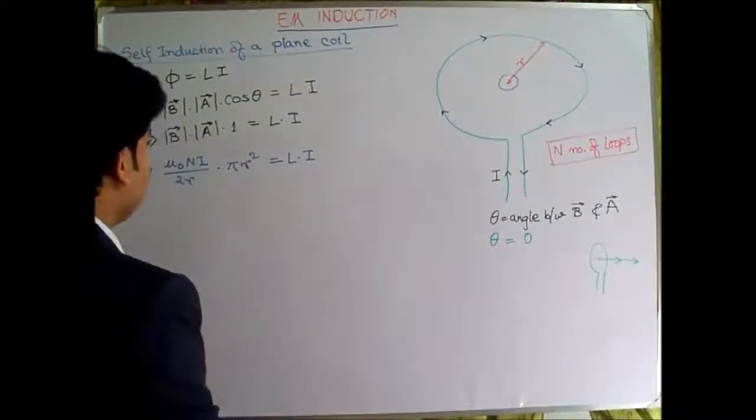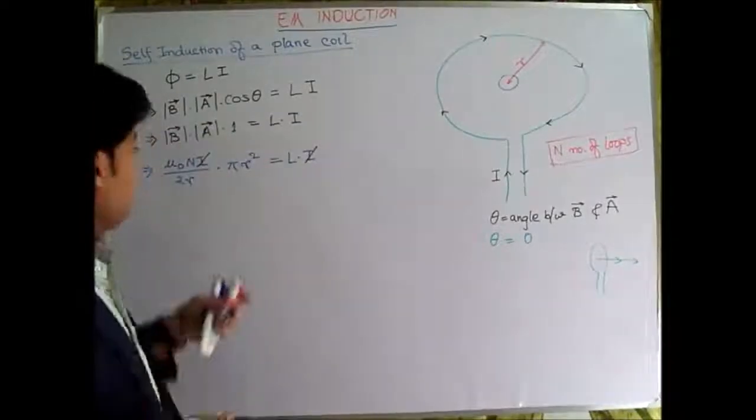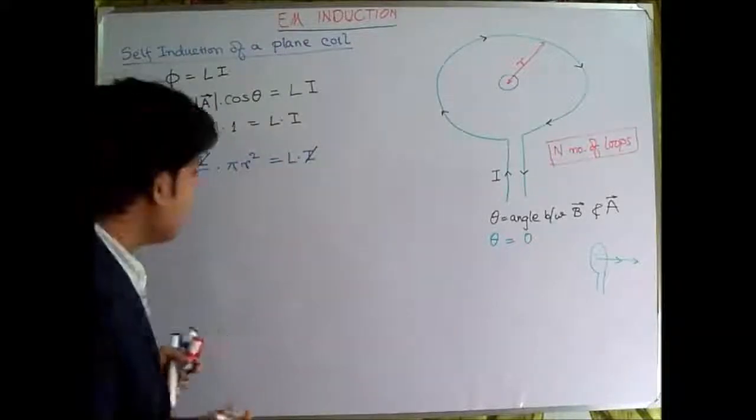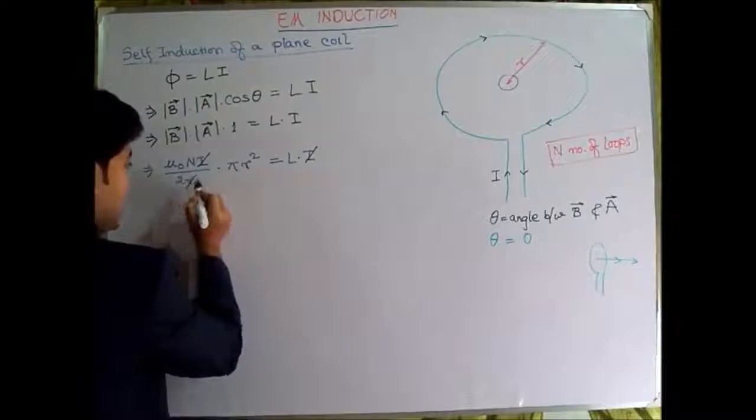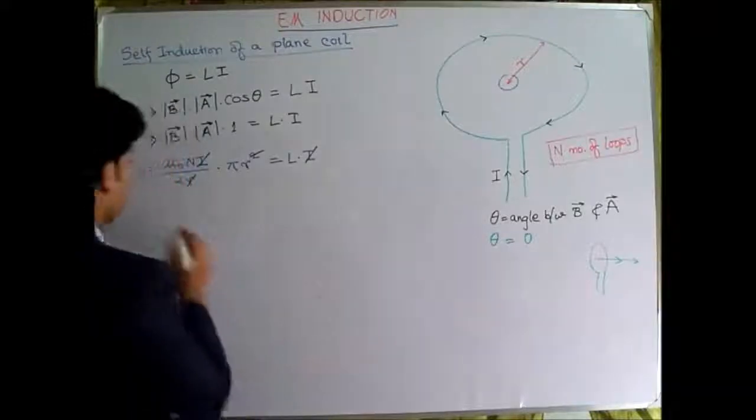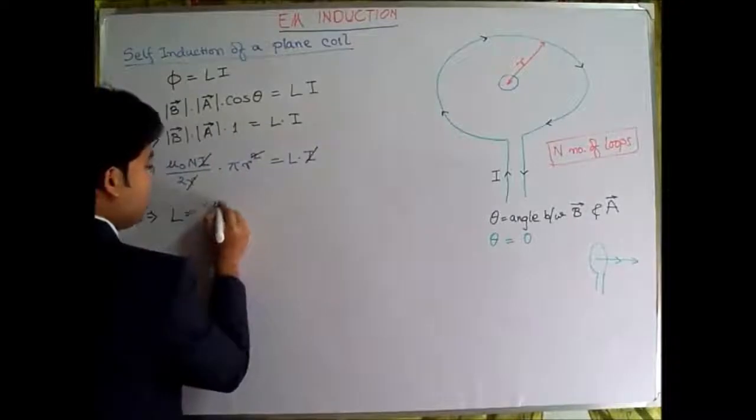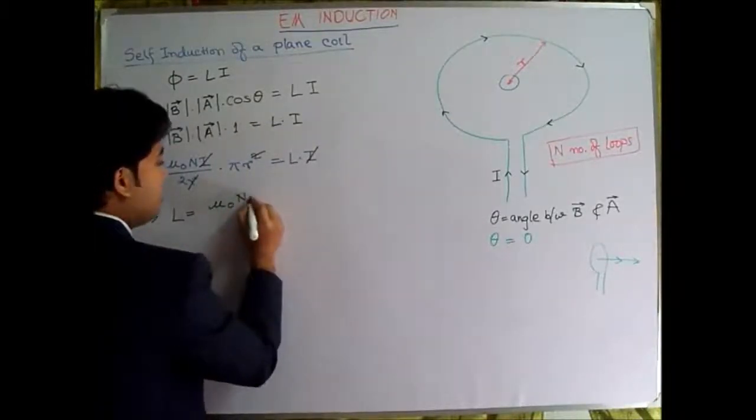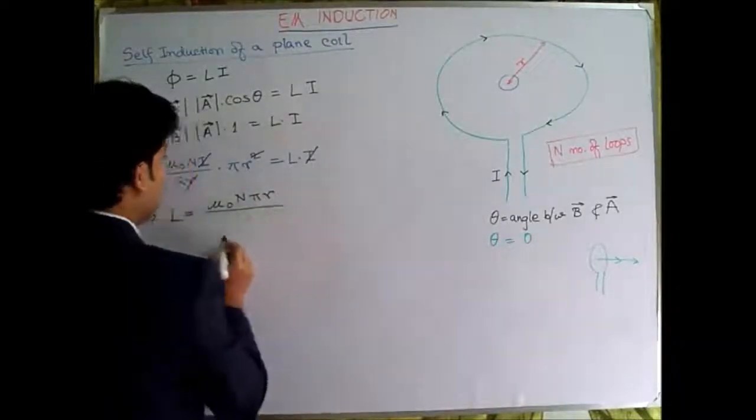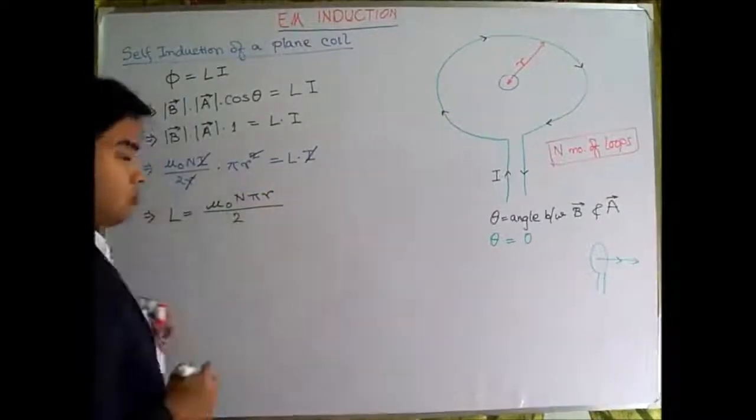Now look carefully, this I will get cancelled with this I, so the remaining term will be equal to L. So if you see, the R could also be cancelled, the R² leaving only one R on the numerator side, so we can write L = μ₀NπR/2.